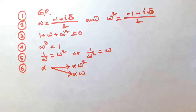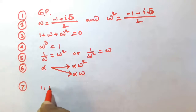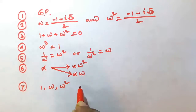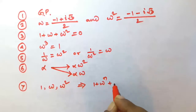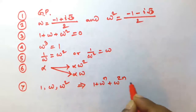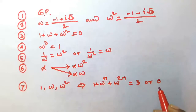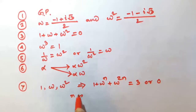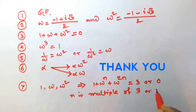And the final property: if 1, omega, omega squared are the cube roots of unity, then 1 plus omega to the power n plus omega to the power 2n is equal to 3 or 0, according as n is or is not a multiple of 3. Thank you.